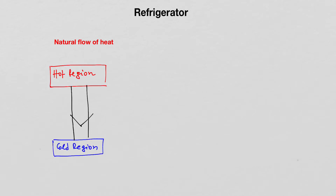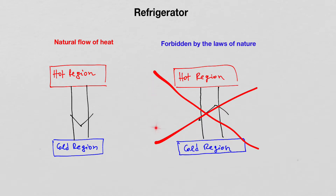However, with the use of certain types of devices, heat can be transferred from a cold region of space into a hot region of space. Those devices are the refrigerator and the air conditioner. The natural flow of heat is from a hot region — a region at high temperature — towards a cold region, which is a region at low temperature. The laws of nature forbid that heat flows from a region at low temperature towards a region at high temperature, so nature doesn't allow for this direction of heat flow to occur naturally.